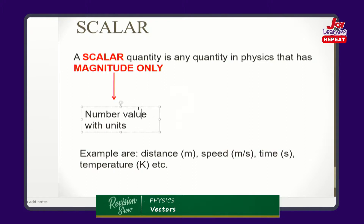Scalar quantities do not have any direction. For example, distance — distance is the interval between two fixed points. Just the interval; we do not care which direction the interval is. All that matters is the interval between the two fixed points, and that is distance. Time — I have never heard anyone say that the time is 3 p.m. to the east or to the south. Direction does not matter for these quantities.